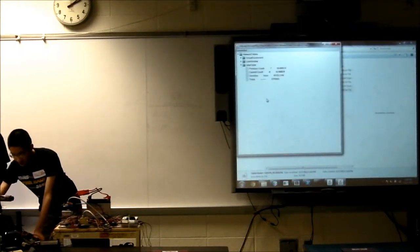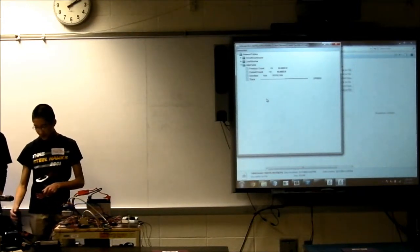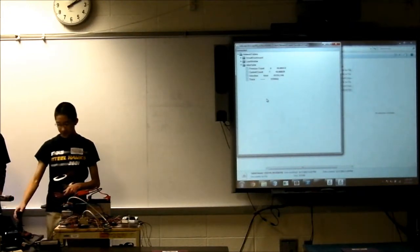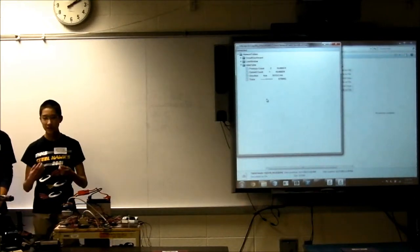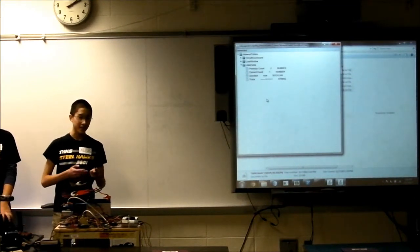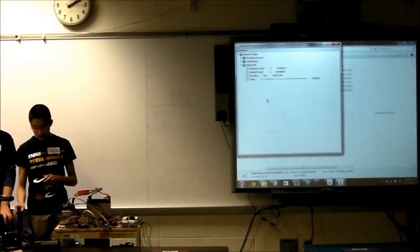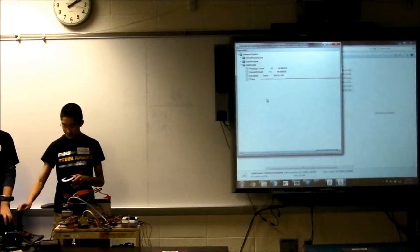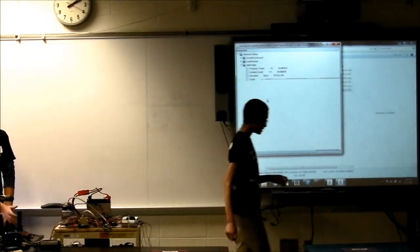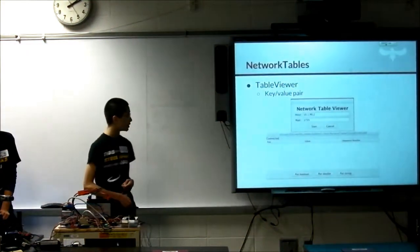Now we have the table viewer. We initialized it in the code, so we can just make a simple counter going on and off, just setting it. This is a very simple example. You should usually use network tables for something more complex, like actual vision processing, sending data to and from the robot to the computer. But this just shows you how TableViewer itself works. There's not much changes to that. It's just bug fixes that were recorded last year, and now they've resolved them for the 2014 year.